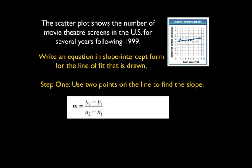The first step here is to use two points that are on the line to find the slope. So let's bring up our formula for finding slope and then plug in the coordinates that we are given. We're given 2, 37 and 6, 38. So we end up with 38 minus 37 over 6 minus 2 which is going to give us a slope of 1 fourth.